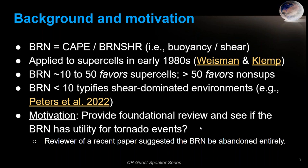This study is motivated by the foundational review that Central Region had last year to review topics that have been around a while but maybe have fallen out of favor. Most of this presentation is review, with a small new part looking at tornadoes related to the bulk Richardson number done with Roger Edwards. Another motivation: a reviewer of a recent paper suggested the BRN be abandoned entirely, and I disagree with that — otherwise I wouldn't be doing this presentation.